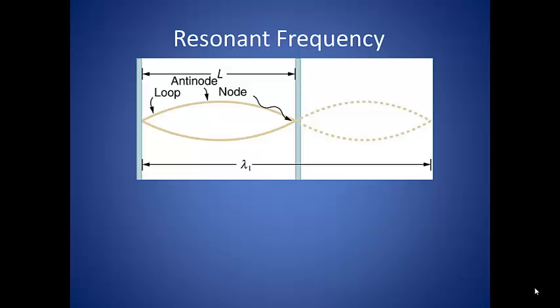Pluck a guitar string. Waves of a great variety of frequencies will travel in both directions along the string. Most of these will interfere with each other and die out, but the waves that travel at the resonant frequency of the string will continue. Both ends of the string will serve as nodes, but there may be others.